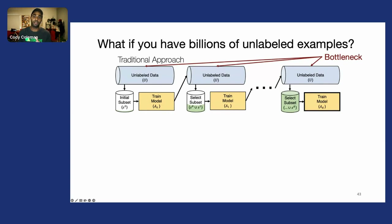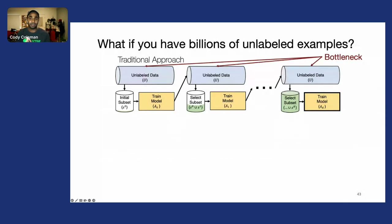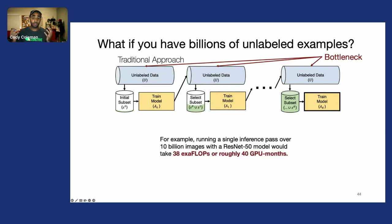Many active learning strategies are linear in terms of unlabeled data, and many others are actually quadratic, making it really, really hard to scale to these large datasets.